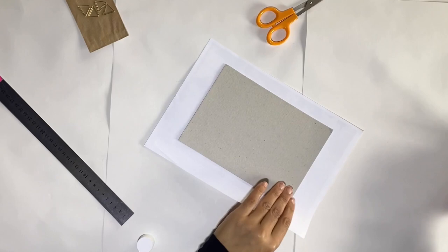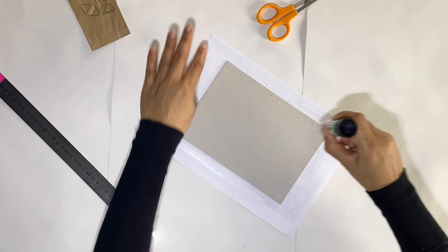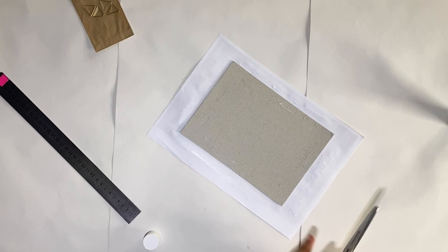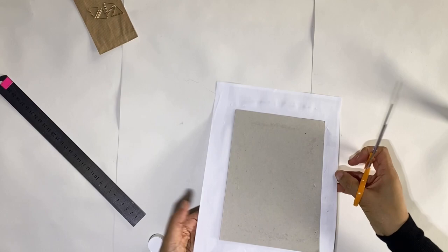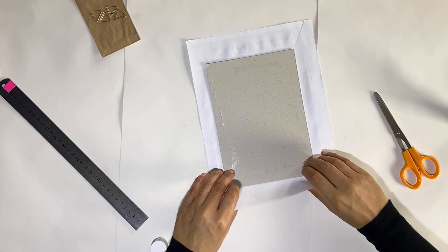Now we're going to neaten the edges by folding them in. So just glue around the edges and then cut at the sides. And neatly fold them over.